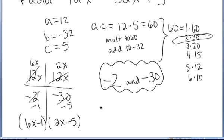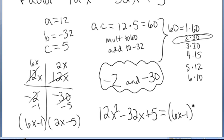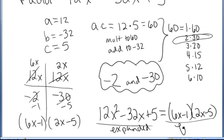And so the original polynomial was 12x squared minus 32x plus 5, and that factors as 6x minus 1 times 2x minus 5. Here is the expanded version, and here is the factored version.